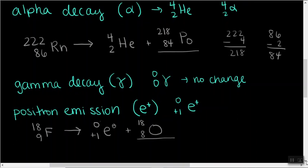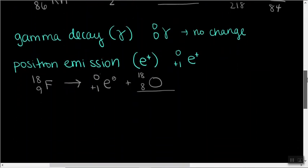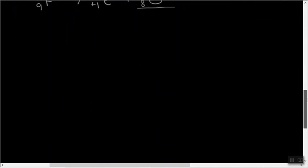And the last type I want to talk about is actually the opposite. So those were all decay, so they would all have products on the right-hand side of the arrow. But there's this one called electron capture, where the capture implies that it's going to be a reactant.